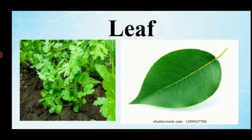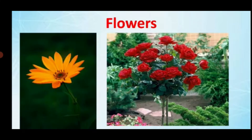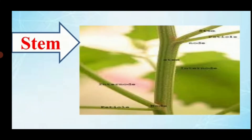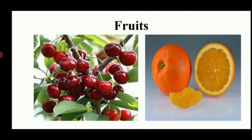Leaf — mostly a leaf is green in color. Flower, stem, fruits — these are all parts of a plant.